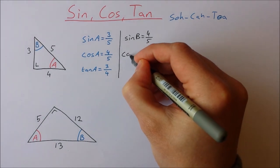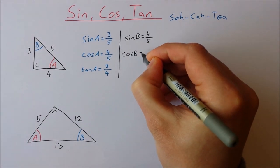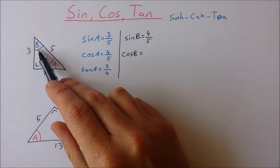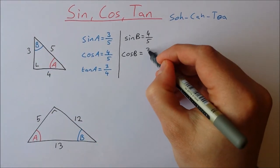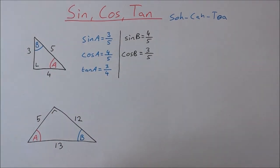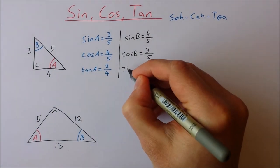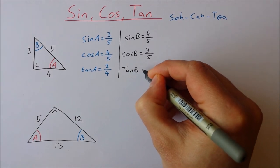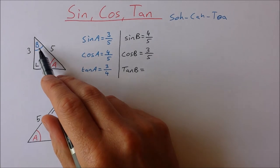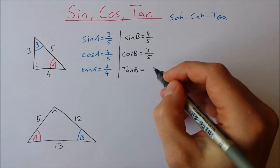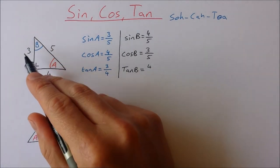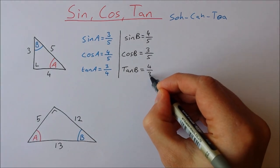Cos of B — cos is adjacent over hypotenuse. Adjacent is 3, hypotenuse is 5. And then the tan of B is opposite over adjacent. Opposite is 4 and adjacent is 3, so it's 4 over 3.